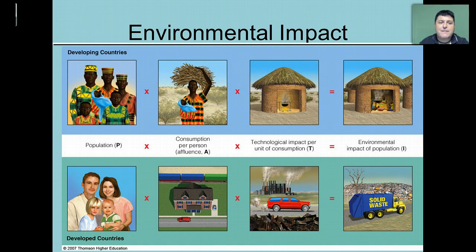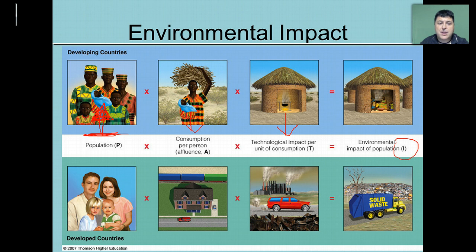So when we look at a developing country, they may have a growing population, but their overall consumption per person — their affluence — is going to be quite low, as well as their technological impact. So their overall impact is going to be determined largely by their population. Large countries like India and China with a huge population, that's where they're getting their most impact. Whereas in developed countries, our populations are usually much smaller, but our consumption per person, our affluence is great, our technology is great, and those are the two things more greatly impacting our role in the environment.